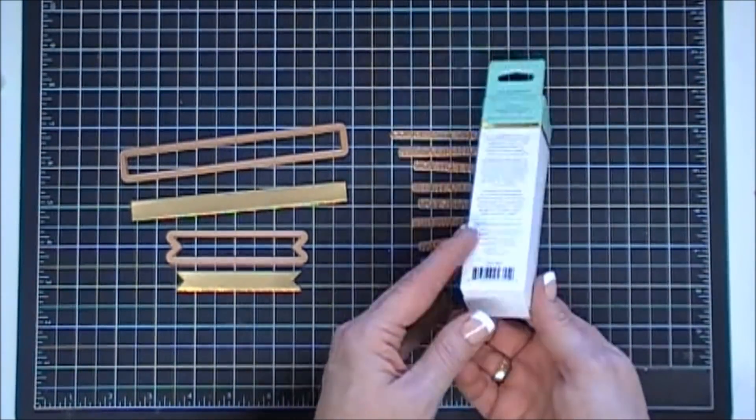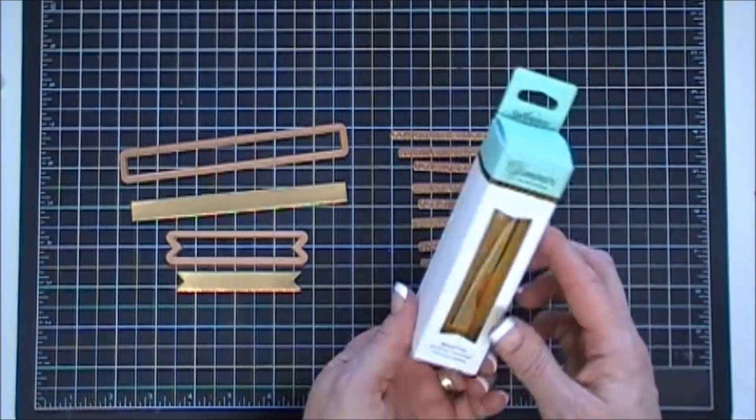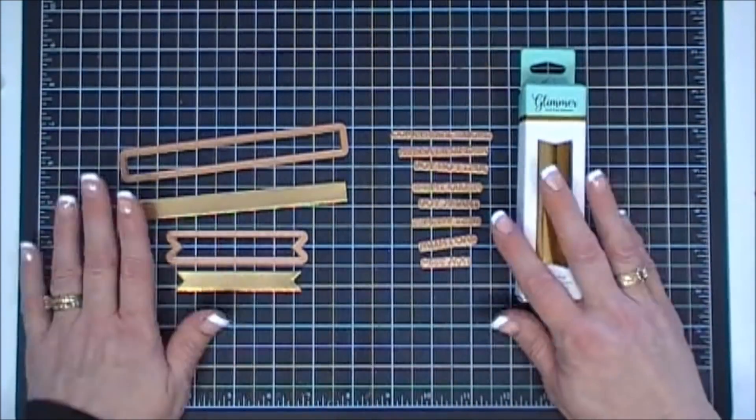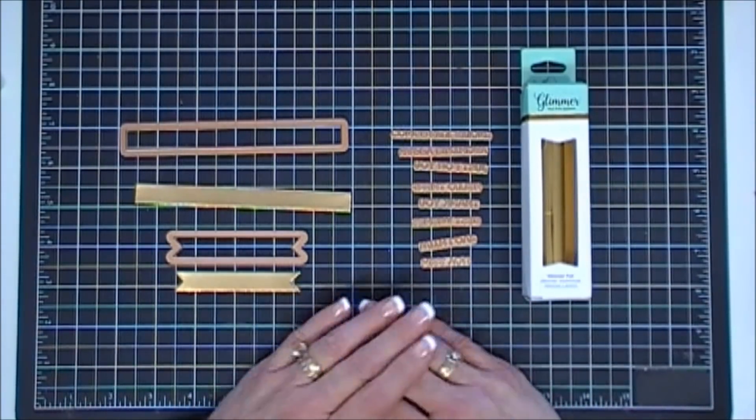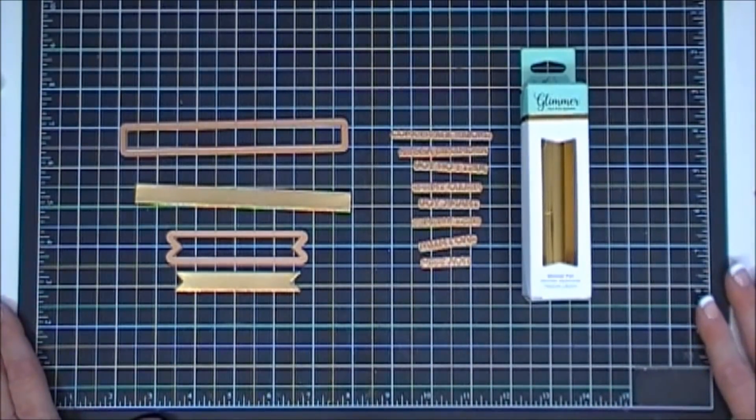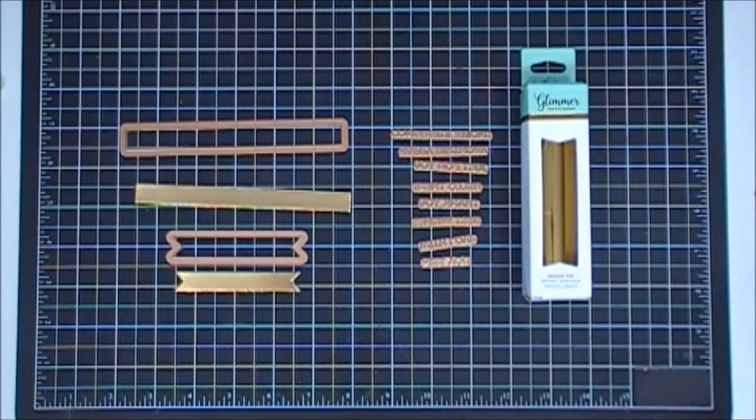And then as always you get a roll of glimmer foil. This month you get gold, which is lovely because I don't have the gold. I have a matte gold but not a regular gold. So this is the kit contents this month and we're going to make a few projects.